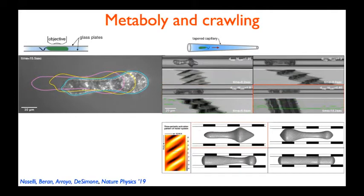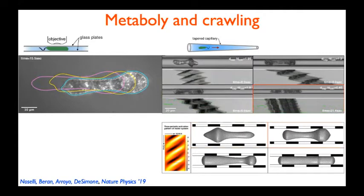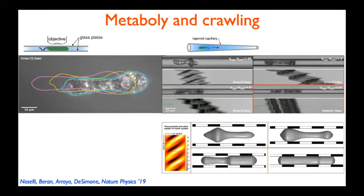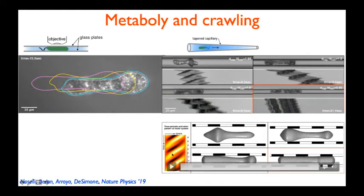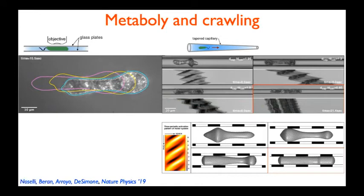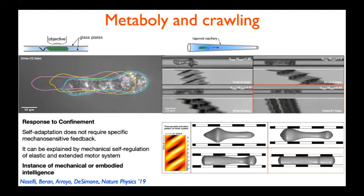We have studied this phenomenon quantitatively by using a mathematical model of the mechanics of the active pellicle. Our main conclusion from this model is that adaptation to increasing levels of confinement can be explained simply with the elastic properties of the pellicle, without changing the activation patterns of the motors. In other words, adaptation to increasing levels of confinement does not require any specific mechanism of mechanosensitive feedback.